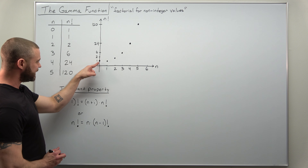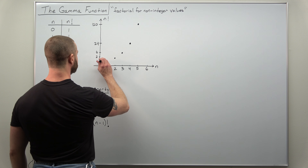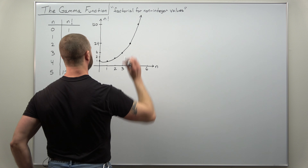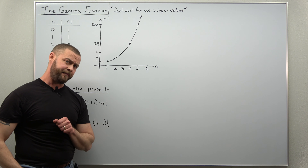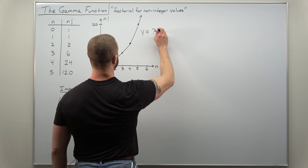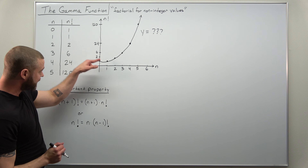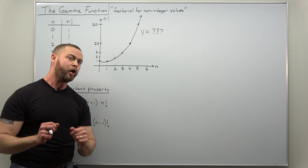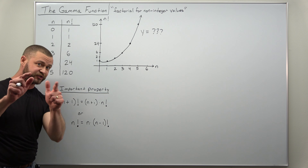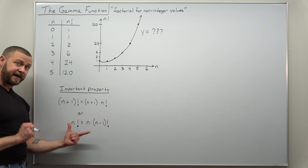We can draw that here. We have the value of 0 factorial which is 1, and then 1 factorial which is 1. It looks like it dips down and then goes back up. We get something like that continuous curve. And what we're going to try to do is find the equation here as a function of x — what we might call the continuous factorial versus the normal discrete factorial.